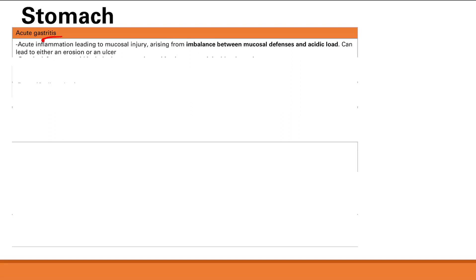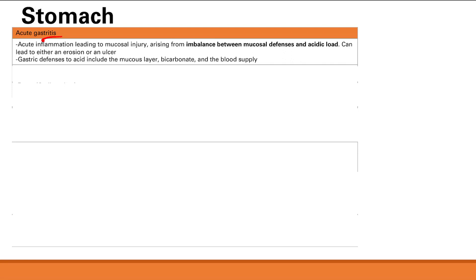Let's talk about mucosal defenses now. There are a couple of things that prevent the acid in our stomach from damaging it, including the mucus layer that lines our stomach, the bicarbonate which neutralizes the H+, and finally, blood supply, which provides nutrients and oxygen to our stomach lining.